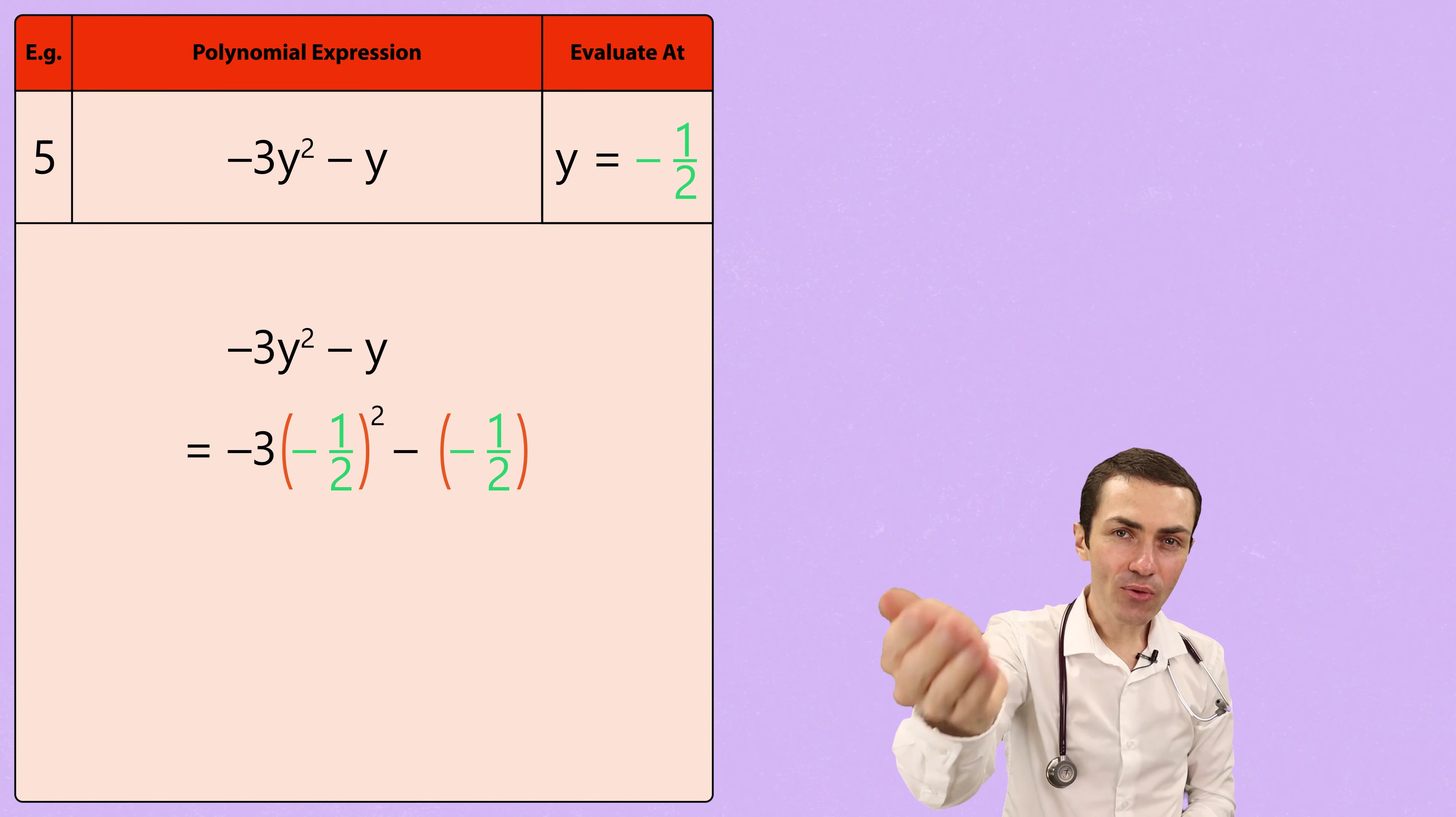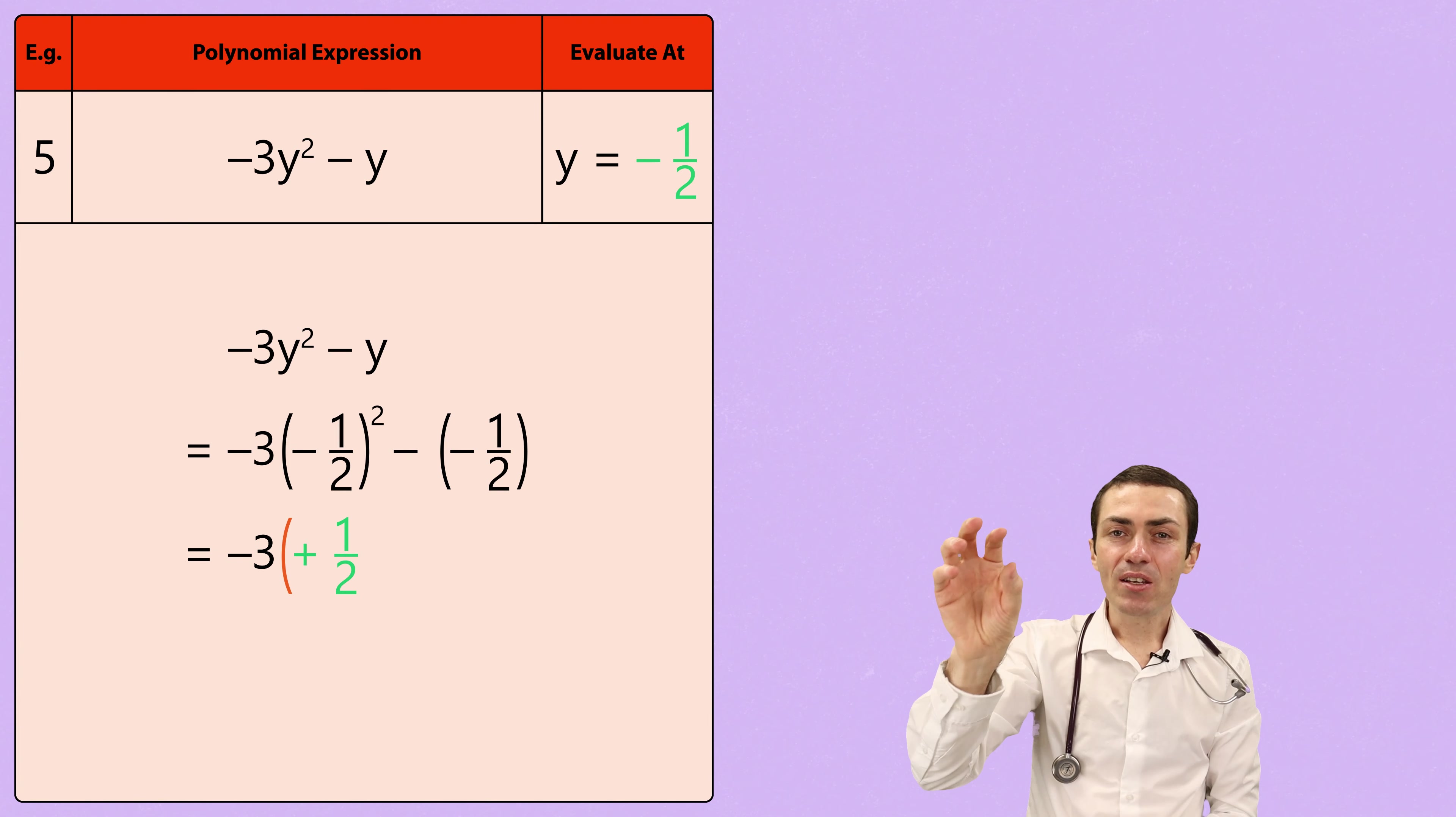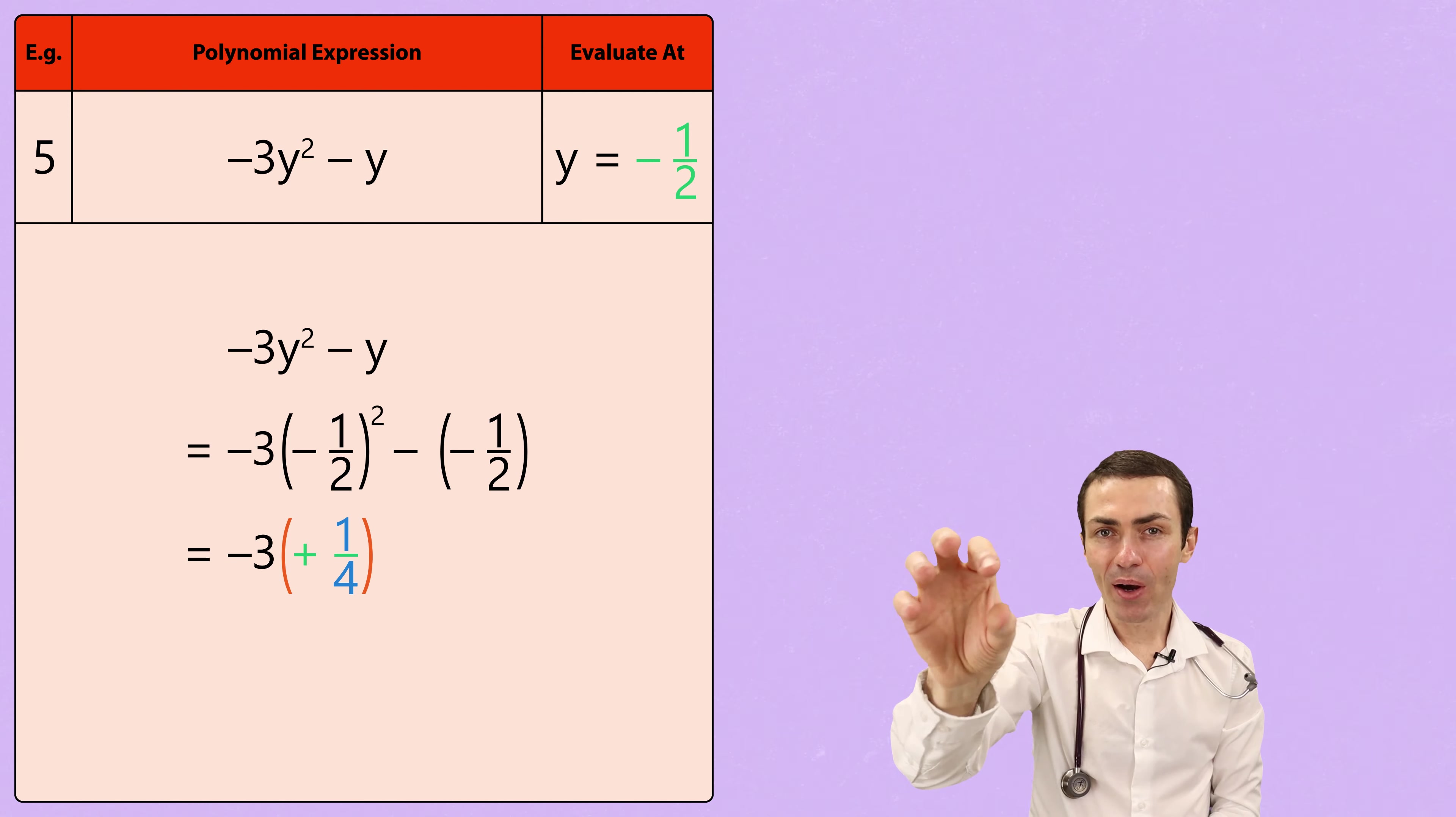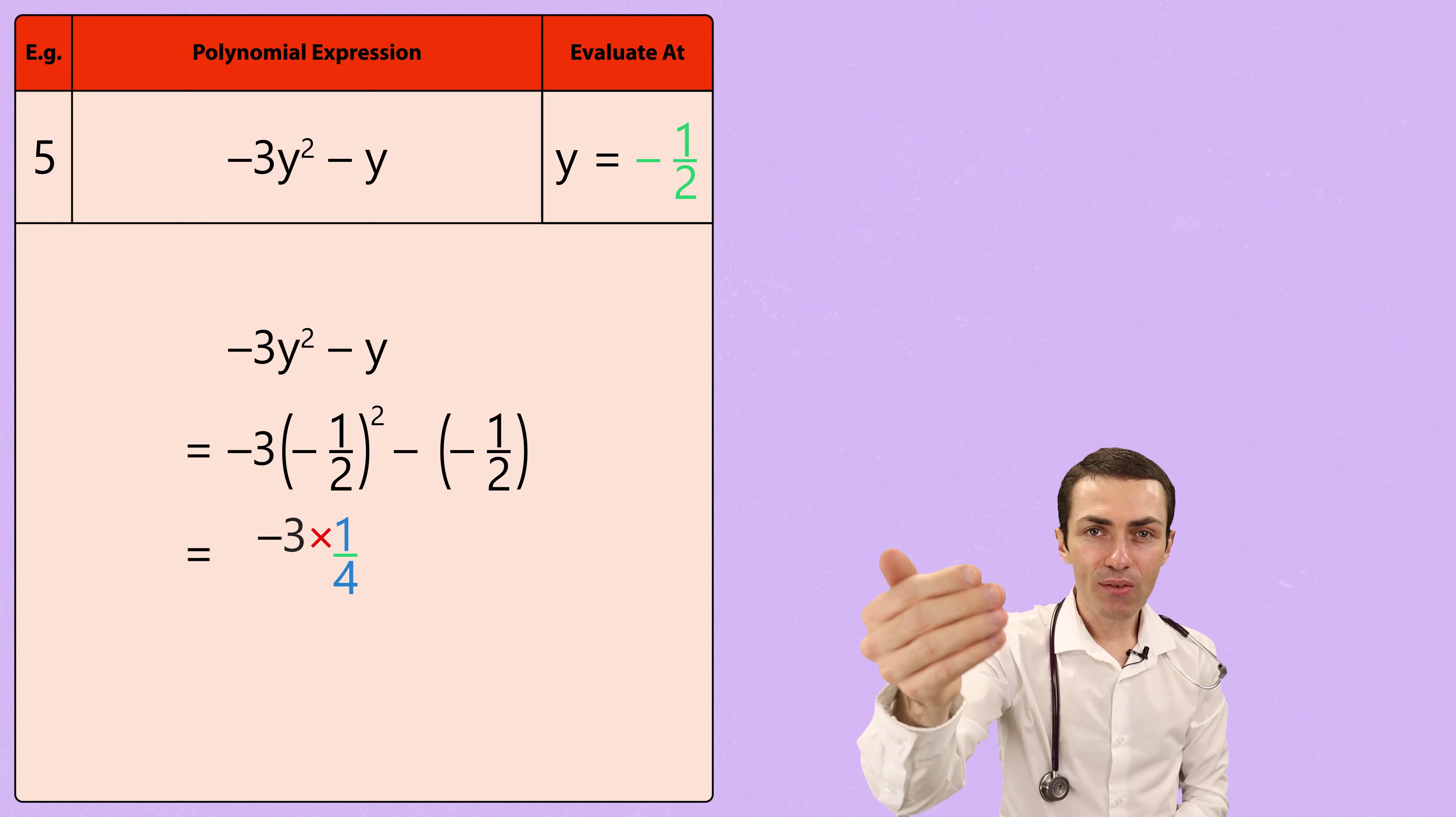When we evaluate the first term, minus 1 over 2 squared just means we need to take minus 1 over 2 multiplied by minus 1 over 2. Of course, a negative multiplied by a negative will give us a positive value. And then apply the square to the top and the bottom of the fraction separately. So, 1 squared gives us 1, and 2 squared gives us 4, leaving us with 1 over 4. And then, we can take the negative 3 and multiply it by 1 over 4. And when we do that, the negative 3 multiplies by the numerator of 1, and nothing happens with the denominator. So, that leaves us with negative 3 over 4.